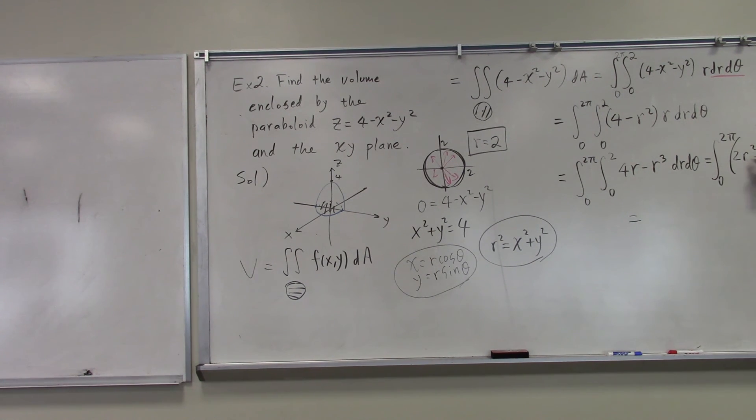And when you plug in 2, that's 8. When you plug in 2, your 2 to the fourth part is 16. 16 divided by 4 is 4. Integrate 0 to 2π. And that's 4, and if you integrate 4, that's 4θ, and you have to plug in 2π and 0, which gives you 8π as your answer.